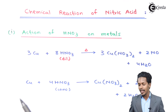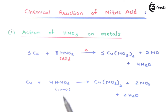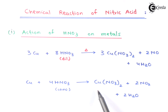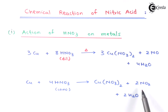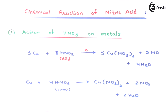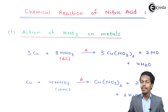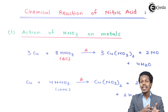Now for the reaction of copper with concentrated HNO3: copper reacts with four moles of concentrated HNO3 to give copper nitrate, Cu(NO3)2, along with two moles of NO2 (nitrogen dioxide) and two moles of H2O as byproducts.